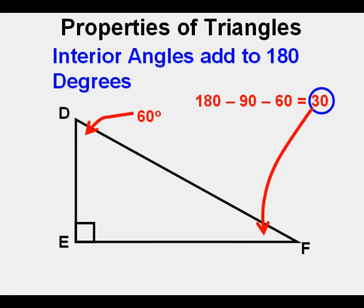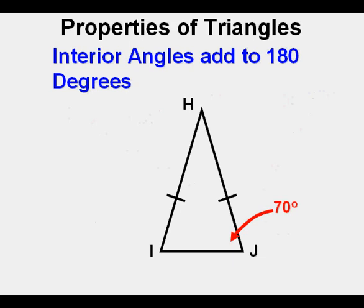If we have an isosceles triangle, we only need to know one angle to figure the measures of the other angles. For instance, if we know that this angle, angle J, is 70 degrees in measure, we know that angle I would also have to measure 70 degrees. And that would give us enough information to find the measure of angle H by taking 180 minus 70 minus 70, which would equal 40 degrees.